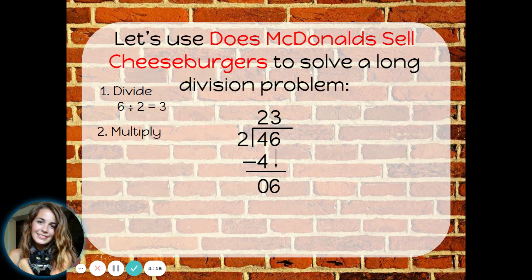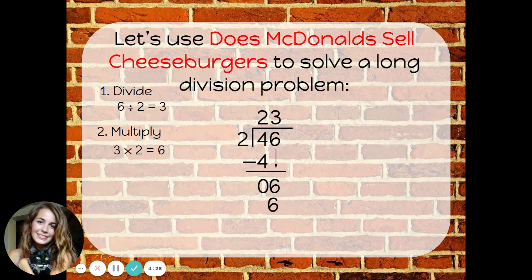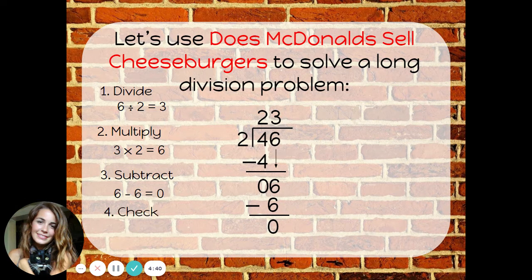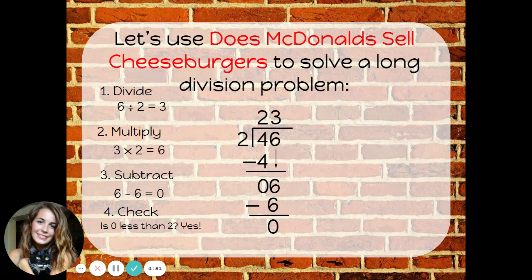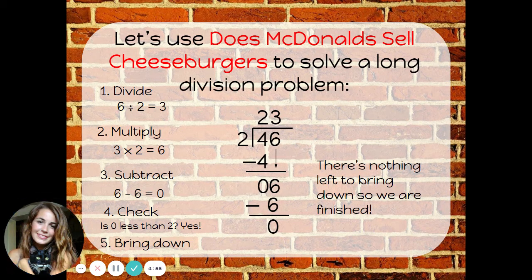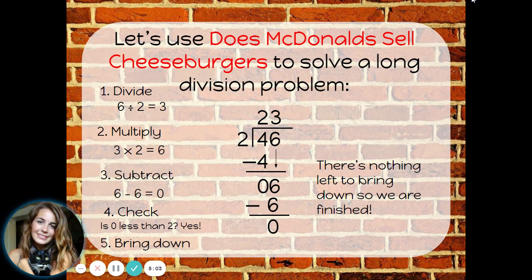The next step is to multiply. That number I just wrote, 3, I'm going to multiply it by the divisor. 3 times 2 is 6. I write that underneath because the next step is to subtract. Now I have my numbers lined up and ready to subtract. 6 minus 6 is 0. Check: is 0 less than 2? Yes. Then bring down the next number. But there's nothing left to bring down in this problem, so we are finished. Up on top we will find our answer.